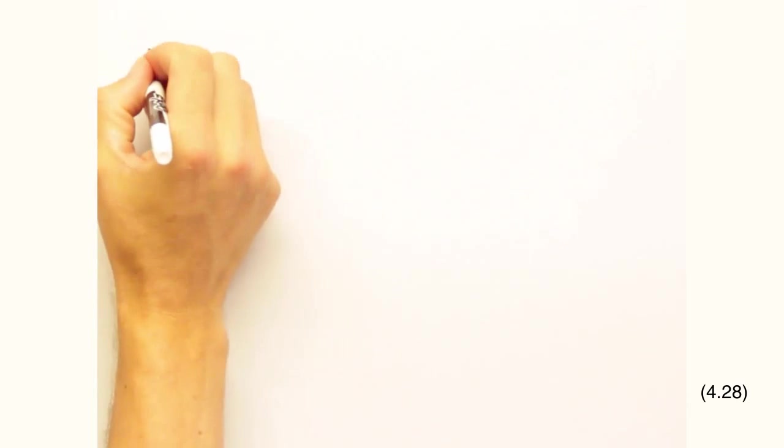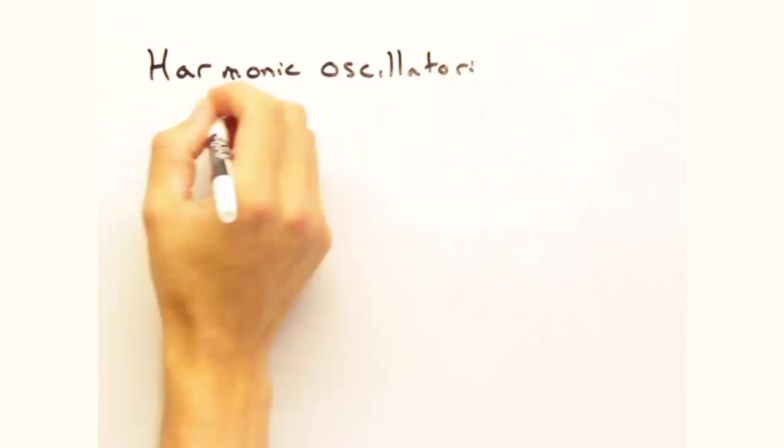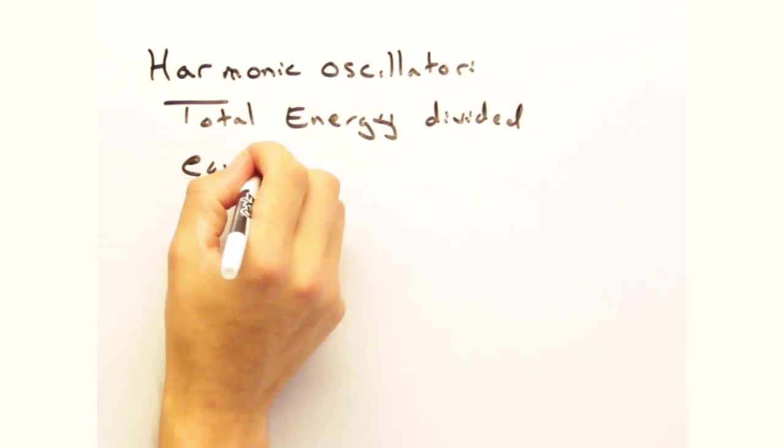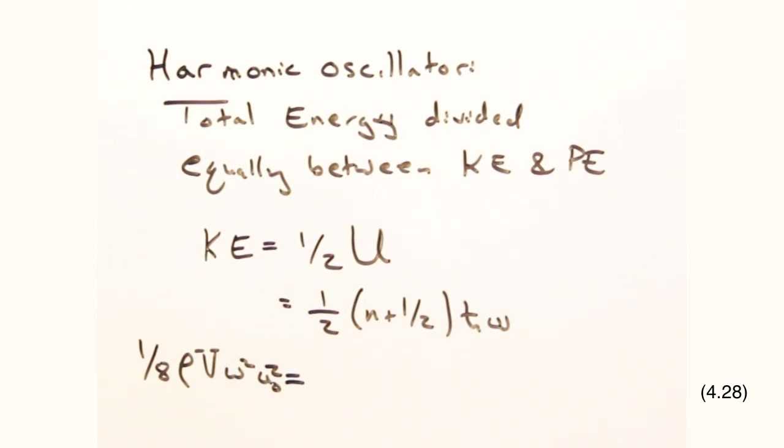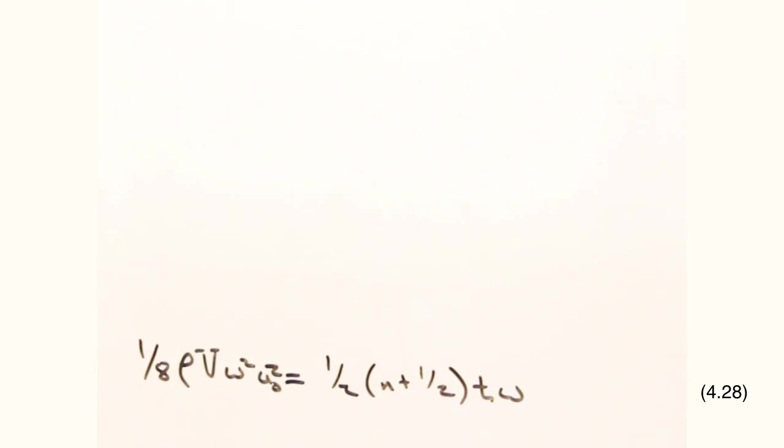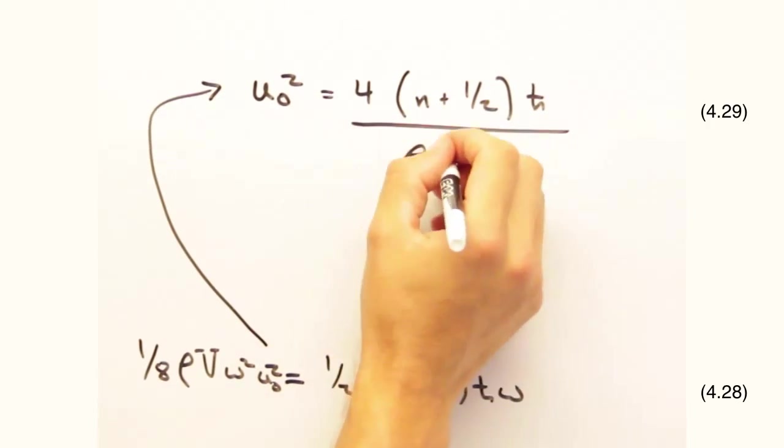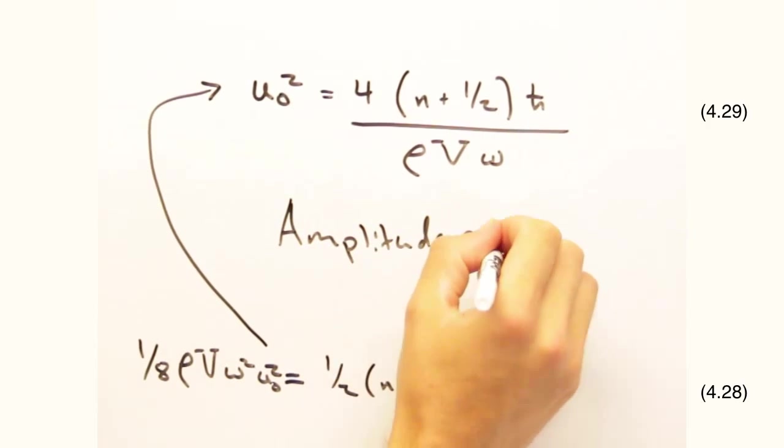For our harmonic oscillator, the total energy for a particular vibrational mode is divided evenly between kinetic and potential energy, giving us half the total energy for our kinetic energy. So then if we set these two expressions for kinetic energy equal, we can then move some stuff around, and get a relationship between the amplitude and the square root of the phonon population, n.